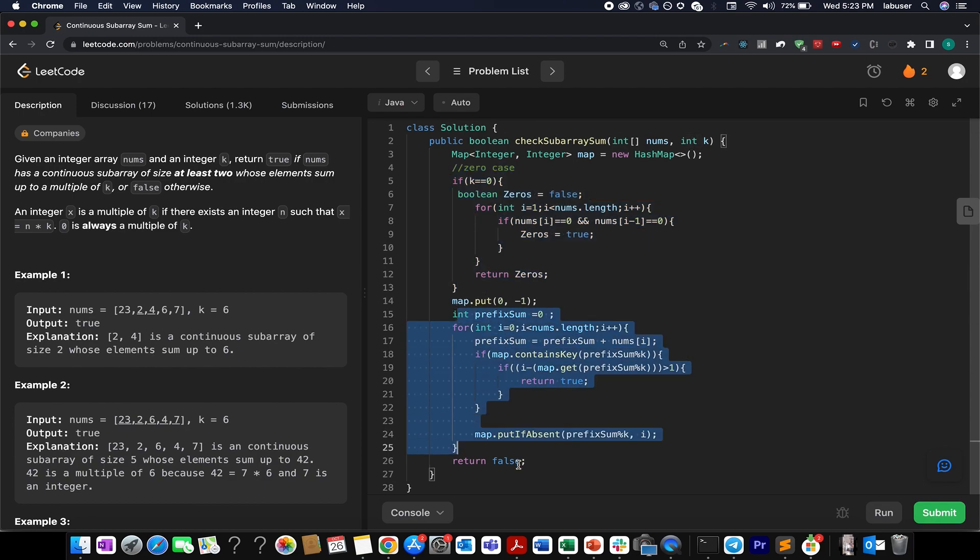But let us focus our attention on this particular code of algorithm. I have created a variable prefix sum and initialized it to 0. I start the iteration. I move element by element. I update my prefix sum.